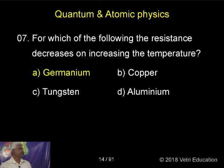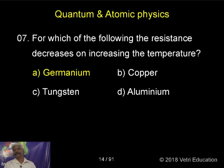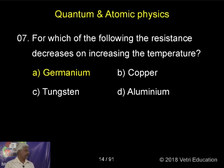For which of the following does resistance decrease or increase with temperature? This is current electricity — the effect of temperature on current electricity, meaning the kinetic interpretation. When we have a temperature-dependent resistor: